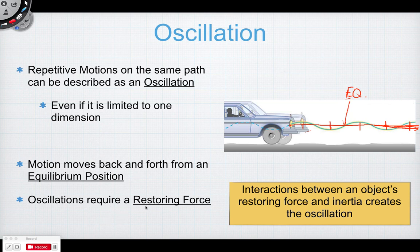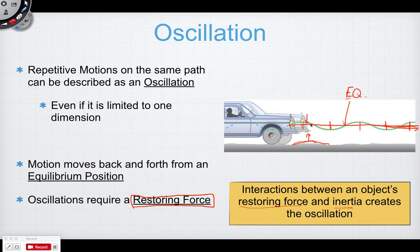There has to be some kind of restoring force to create oscillation. The interactions between the object's restoring force and inertia create oscillations. The road pushes up on the car as it goes over a bump, then something pulls it back down — it overshoots equilibrium, gets pushed back up, then pulled back down. It always wants to return to the equilibrium position.